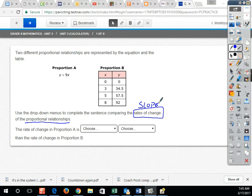Clearly the rate of change, or slope, is 9 for Proportion A. But for Proportion B, it's not quite as simple because we have a table and they have the X values going up by 3, and then 2, and then 3 again. Over in the Y column, you have a rise between 0 and 34.5 of 34.5, and we can continue all the way through.